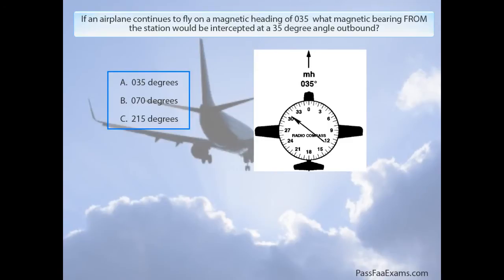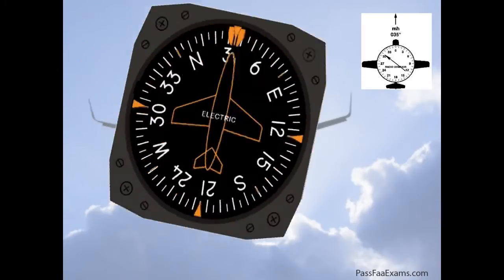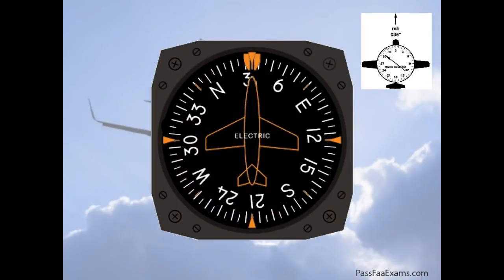As usual, the simplest way to solve questions that have to do with an NDB is to convert our heading indicator into an RMI. So here's our DG on a heading of 035, and I'm going to move the needle from the ADF inside the heading indicator.